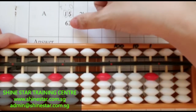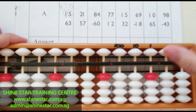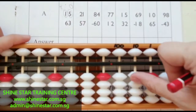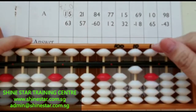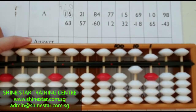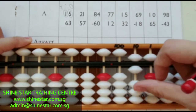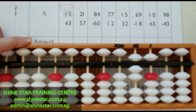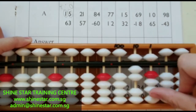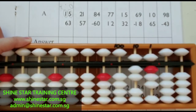Fifteen plus sixty-three. Sixty, three. Let's count the answer together.